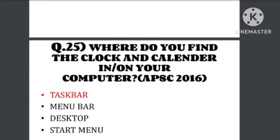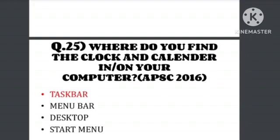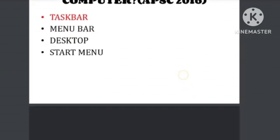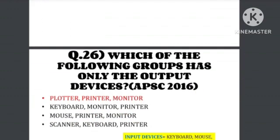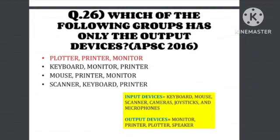Question number 25: Where do you find the clock and calendar in your computer? The answer is the taskbar — it is located at the bottom of the screen. The taskbar holds the clock and calendar. On that taskbar, the clock and calendar are displayed.